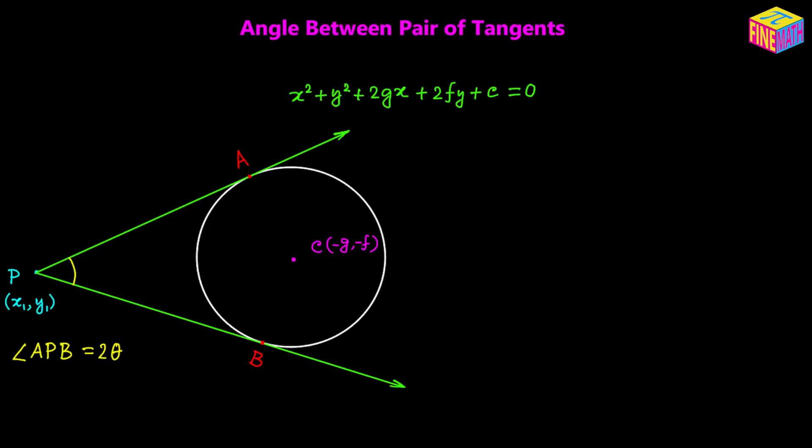From that point we have drawn the pair of tangents, and the points of contact are A and B. For this pair of tangents we have to find the angle between them, which is essentially the angle APB or BPA. I have denoted that angle to be 2 times theta — that is the angle we have to determine in terms of the other given information.